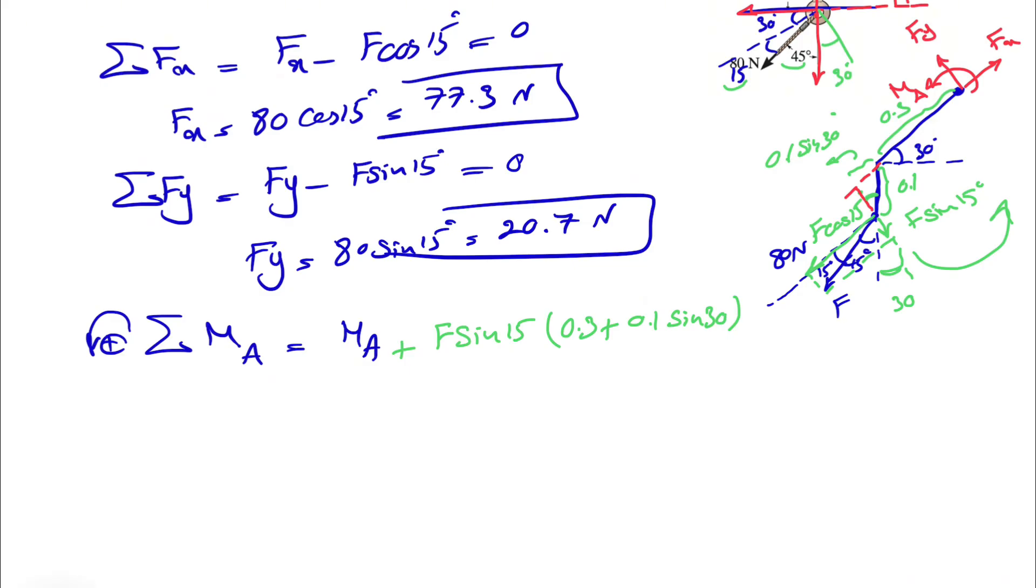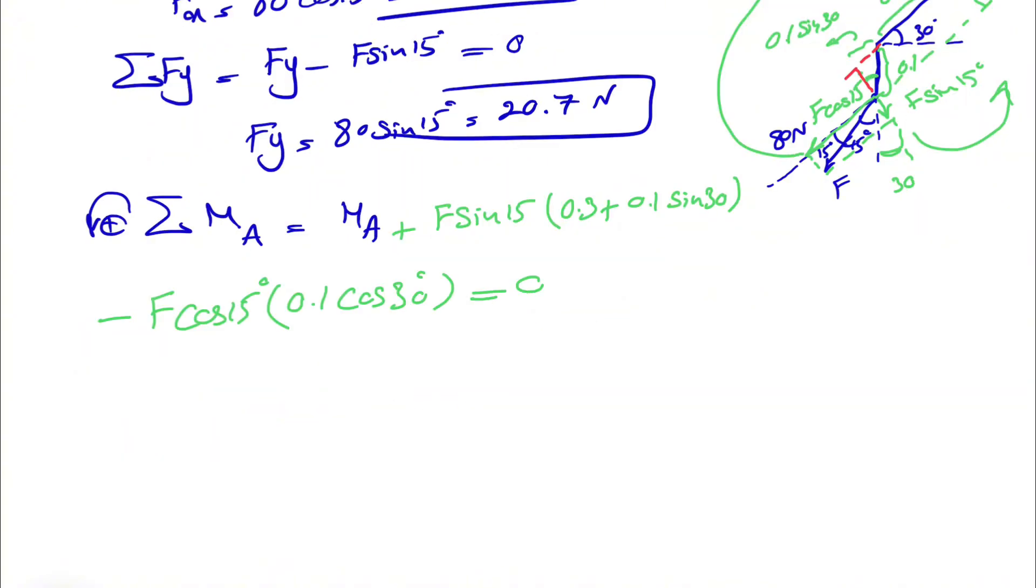We also have the moment of the X component, which is this one. The moment is in the opposite direction, so negative F cosine of 15 degrees, and the distance that we have is the line of action. We need this distance here, which is basically 0.1 cosine of 30 degrees. So all we need to do is calculate this one.